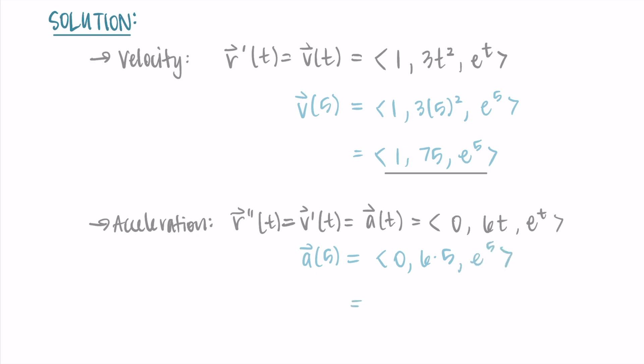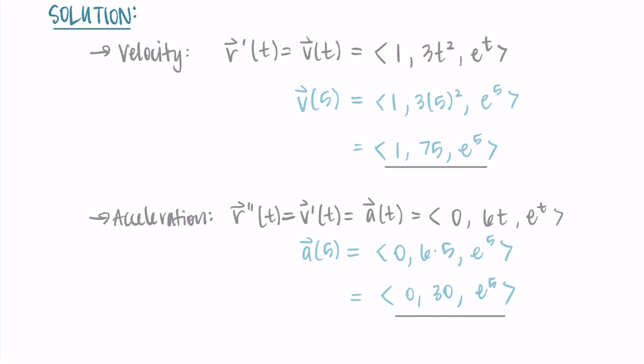That gives us an acceleration vector of ⟨0, 30, e⁵⟩. Not too bad — we were given position, needed to find velocity and acceleration, and we just took derivatives and substituted in the value we were looking for.